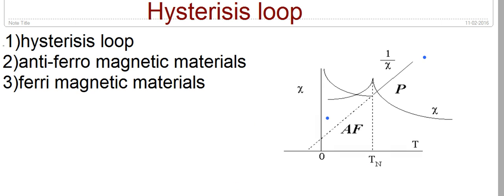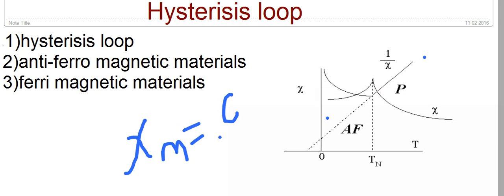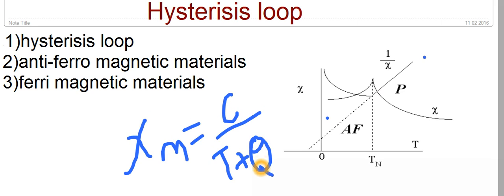Now we will see how the Curie-Weiss law applies for this type of material. For anti-ferromagnetic materials, susceptibility is equal to C divided by (T plus theta), where C is a material-specific constant and T is the applied temperature. Note that this is plus theta, not minus theta, where theta is the Neel temperature — the temperature at which the susceptibility of the anti-ferromagnetic material is at its maximum value.